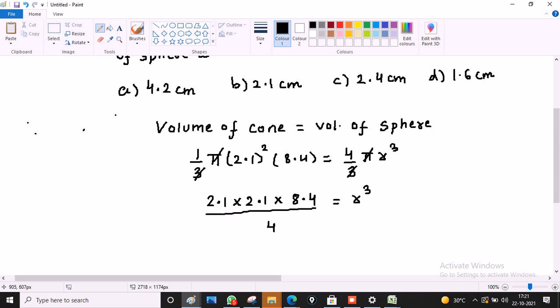Now 4 cancels this 8.4 and we get 2.1. R cube value is 2.1 whole cube. So compare the basis and R will be 2.1 cm. And B is the correct option.